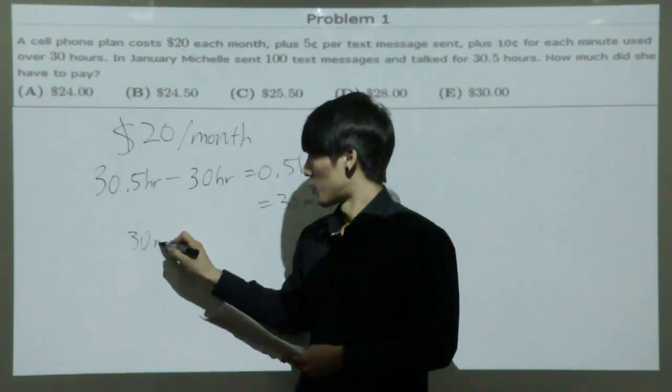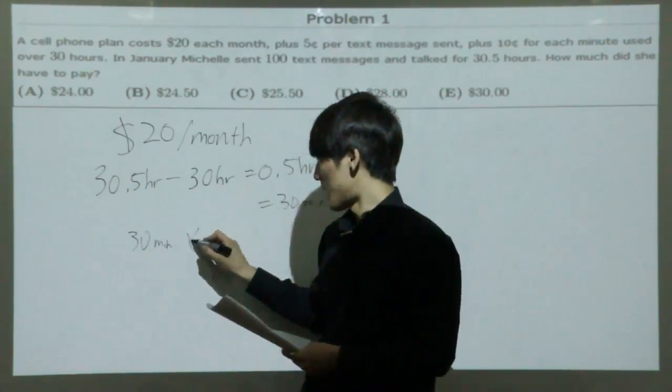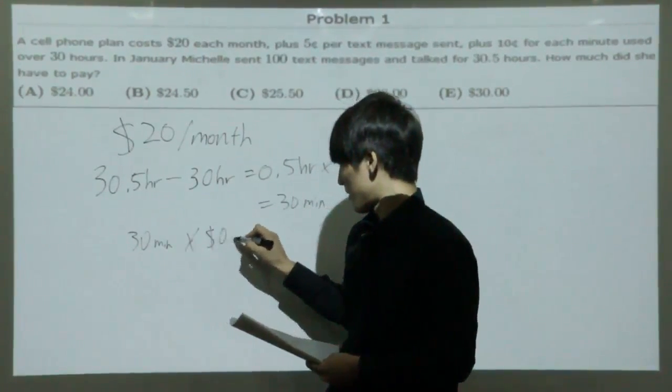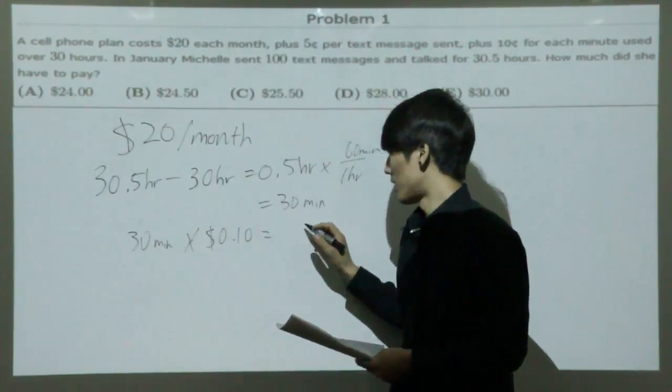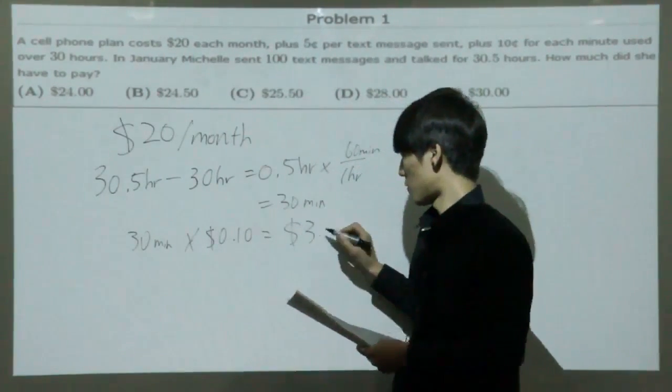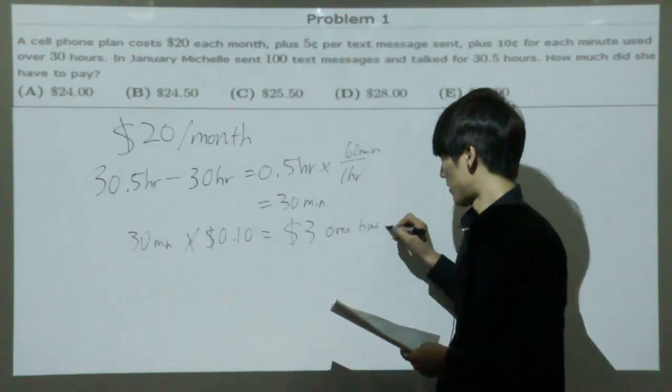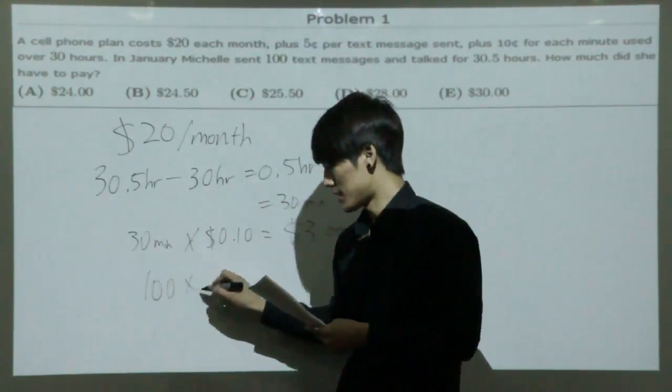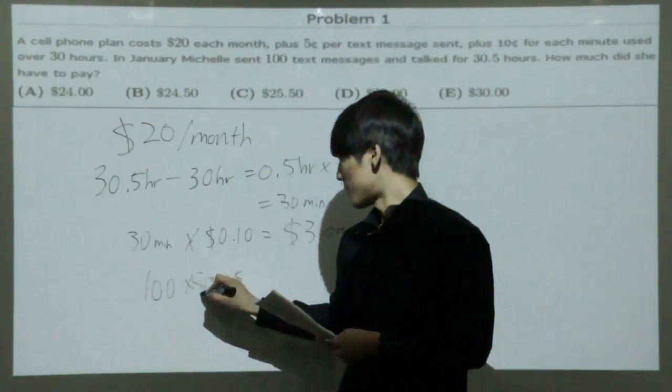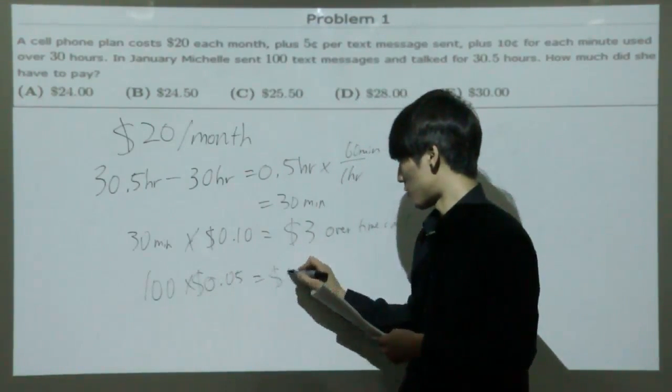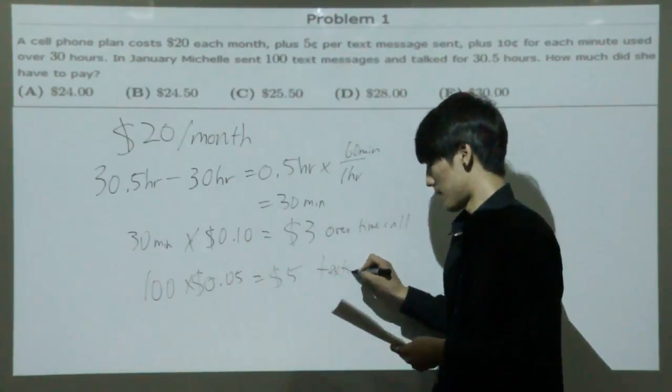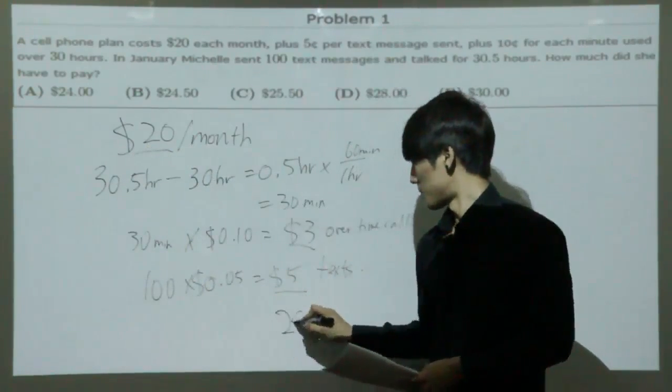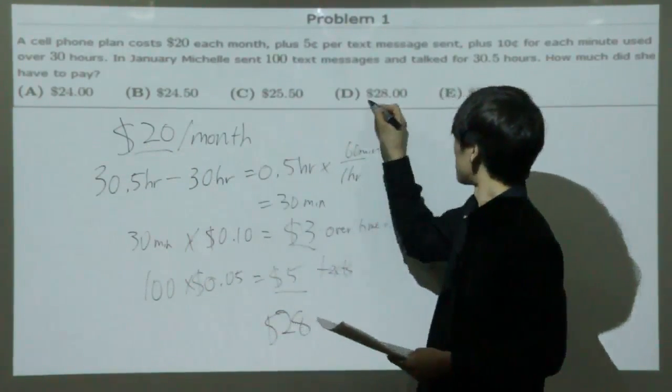Since she used 30 minutes over and it costs 10 cents, that means 10 cents is $0.10. If you multiply it, it becomes $3 for the overtime call. Then you have to look at the text messages sent: 100 text messages at $0.05 per message, which means it's $5 for the texts. So if you add them together, 5, 3, and 20, it becomes $28, which is choice D.